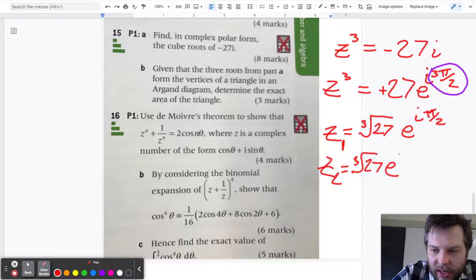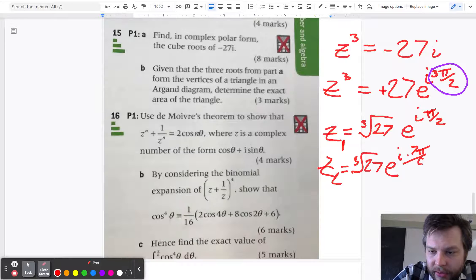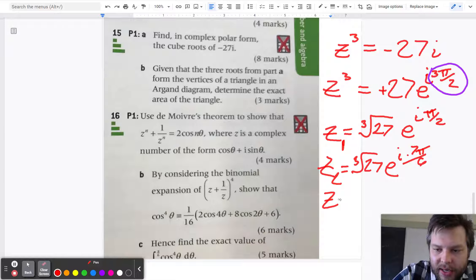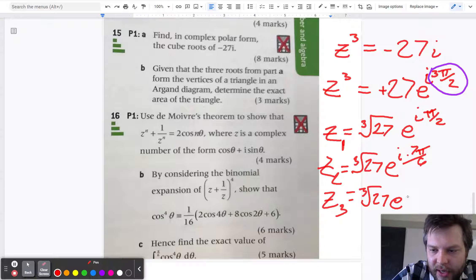e to the i times 7 pi over 6. And then z3 is going to be the cube root of 27 e to the i. If I'm adding another 2 pi, that becomes 11 pi over 2. And so dividing it by 3, we get 11 pi over 6.